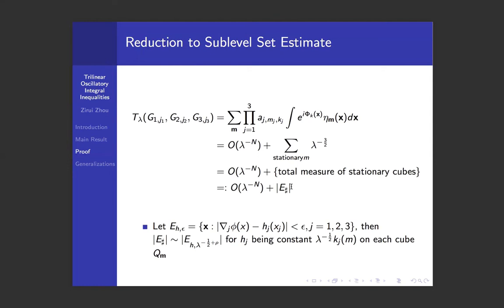Now we are ready to reduce to a sublevel set estimate. So E# here is a total measure of the stationary cubes. However, because of the uniform bound on the second order derivatives on the phase function φ, we can replace E# by a smoother version. Let's call it E_{h_ε,f_ε}, defined as all the x such that |∇_j φ - h_j(x_j)| is less than ε. We can compare this definition with the definition for the stationary cubes. We see that actually to connect these two definitions just let h_j(x_j) be the step function such that h_j(x_j) equals k_j on the interval and we are done.